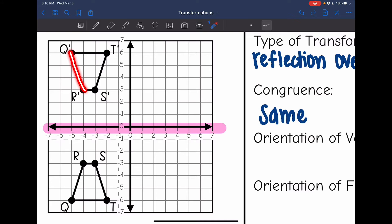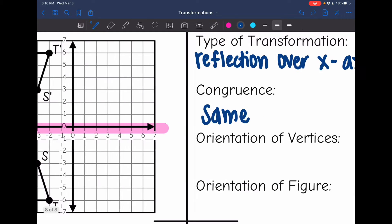So follow it counterclockwise. I go R, Q, S, T. If I do it here, I do R, S, T, Q. So the orientation of the vertices changed.